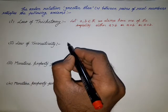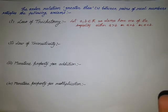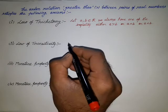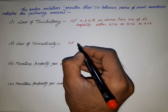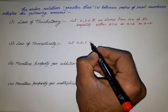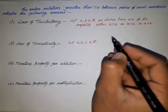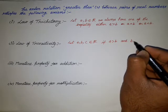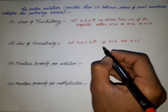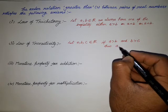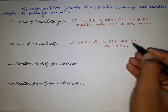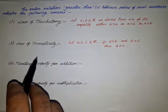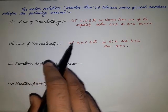The Law of Transitivity says that for every three distinct real numbers a, b, and c belonging to the set of real numbers, if a is greater than b and b is greater than c, then it always follows that a is greater than c. This is the second law of order axioms — the Law of Transitivity.